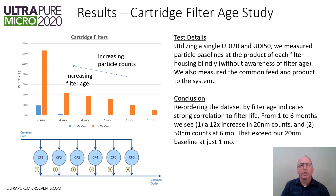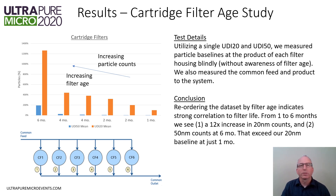As you can see from the schematic, our filter particle study was applied to an array of six parallel cartridge filter housings with a common feed and a common product. We utilized the UDI-20 and UDI-50 optical particle counters to measure particle baselines on the product side of each filter housing, as well as on the common feed and common product. Reordering the dataset by filter age exposed a strong correlation between particle counts and filter life. Remarkably, from just one to six months, we see a 12x increase in 20 nanometer counts, and 50 nanometer counts at six months will exceed our 20 nanometer baseline at just one month.